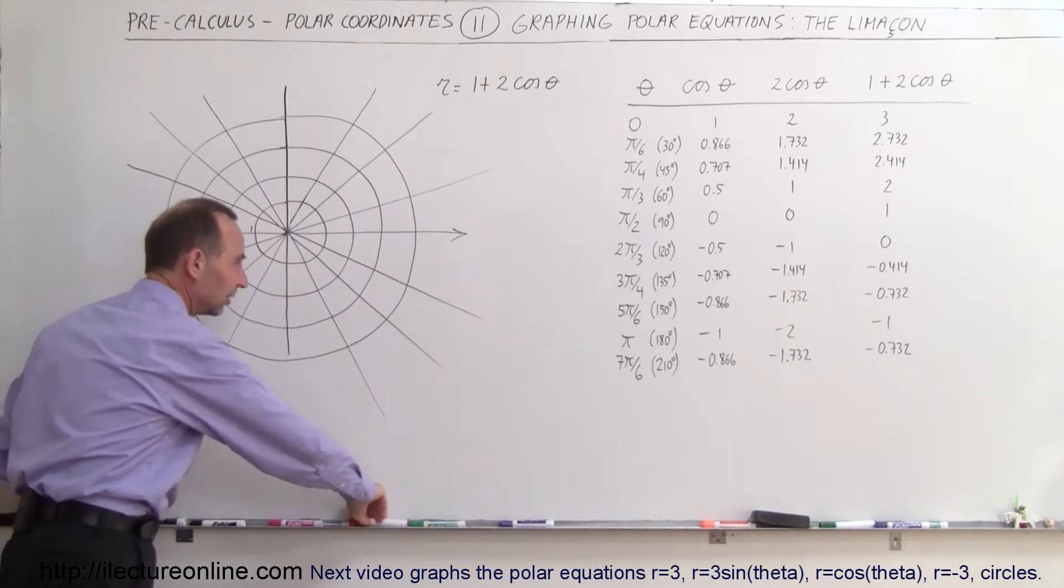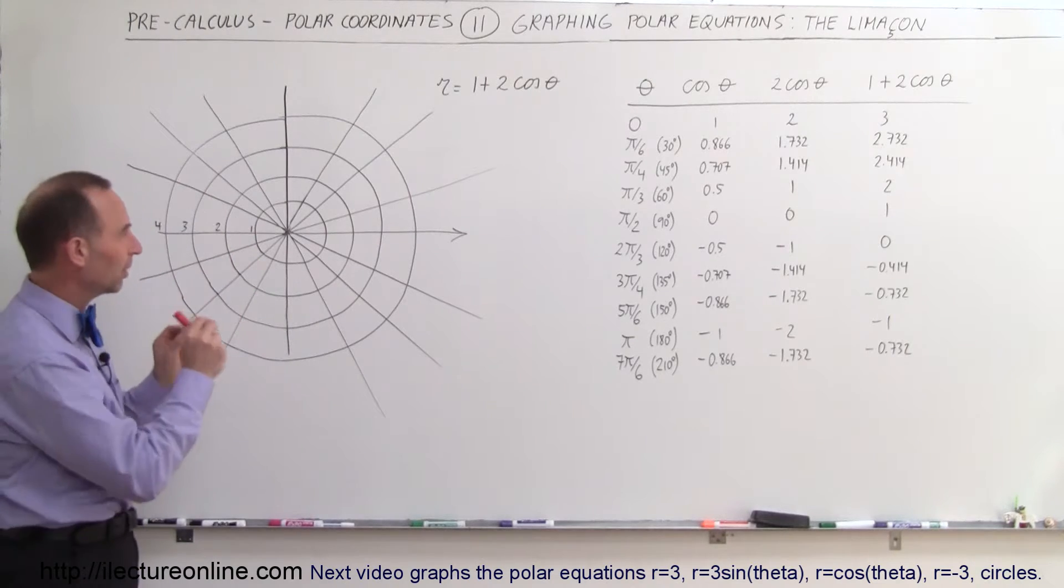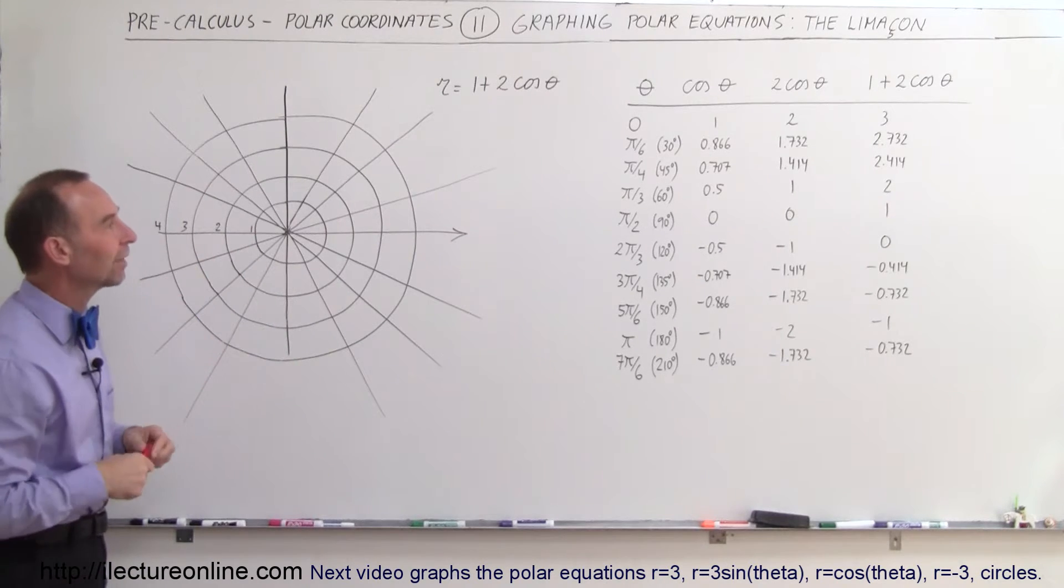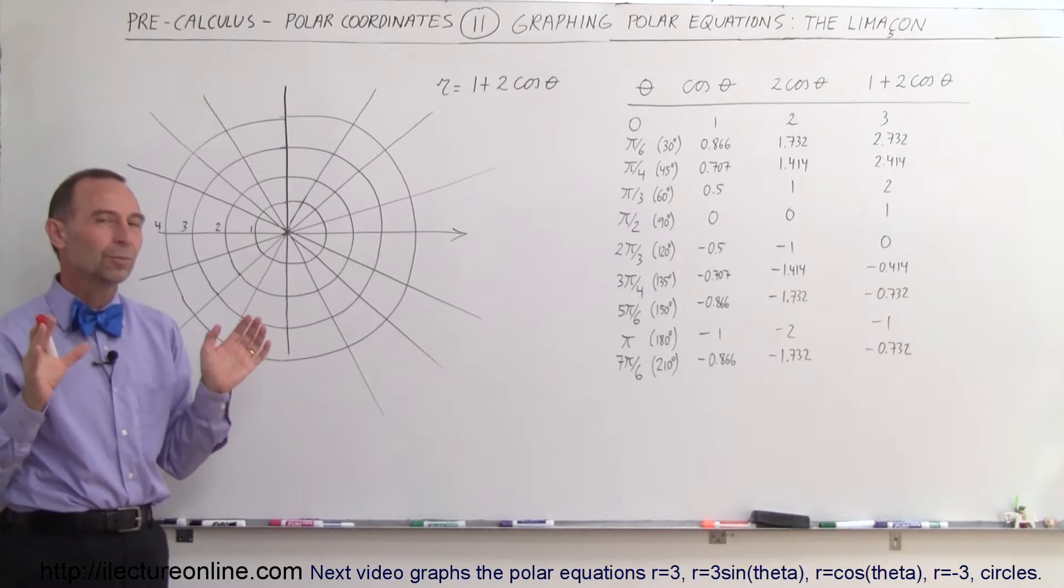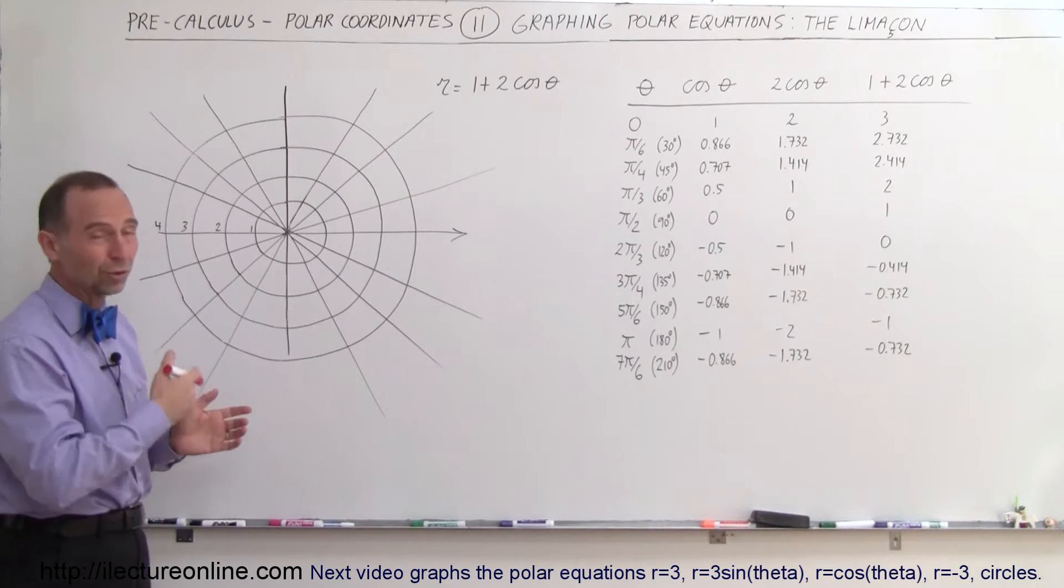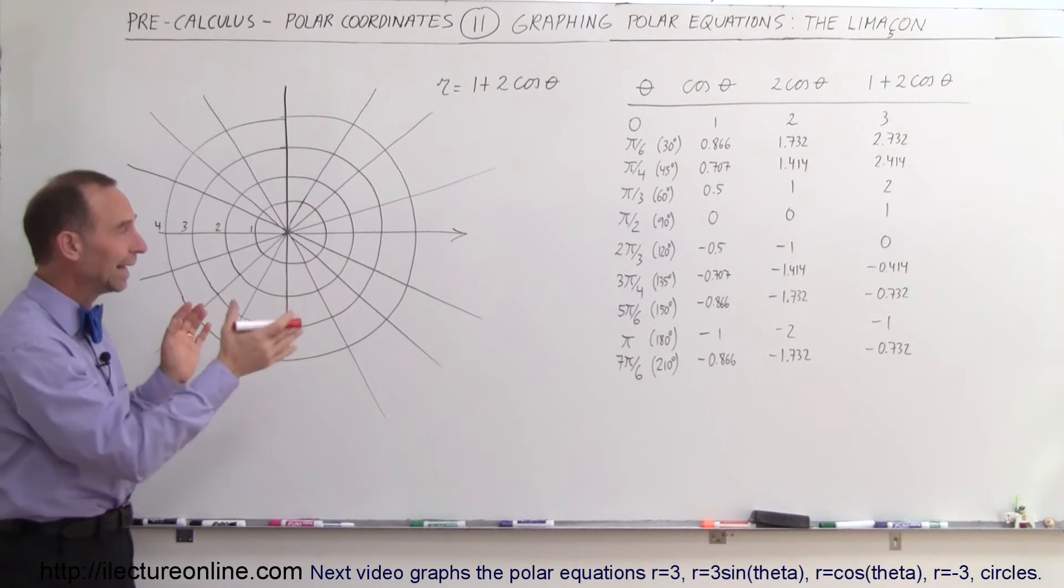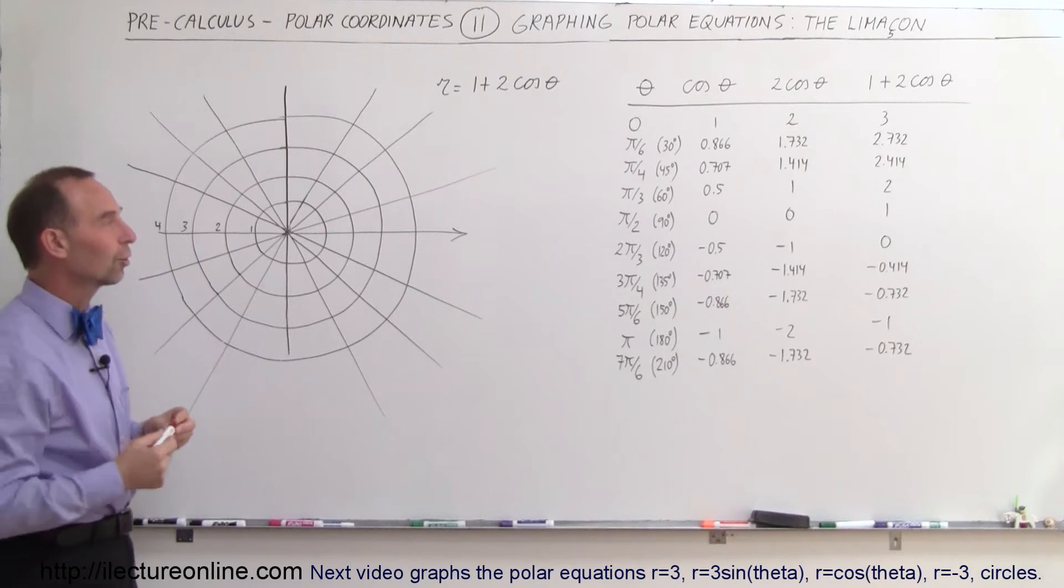All right, so let's get a different color. Let's get red, and now we're going to plot some points. We're going to try and use the principle of symmetry as well because we don't have to do the whole thing. We can do partial and then see how the rest of the curve will look like.